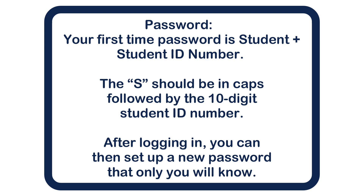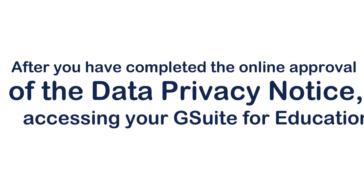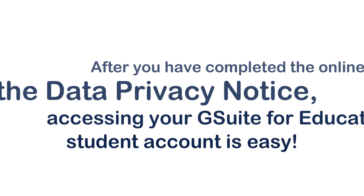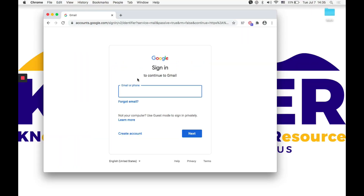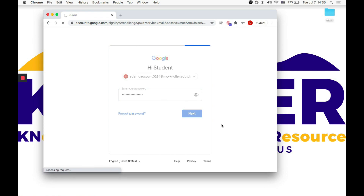The S should be in caps, followed by the 10-digit student ID number. After logging in, you can then set up a new password that only you will know. After completing the online approval of the data privacy notice, you will be prompted to the Google login page. Click sign in in the top right corner and use your MC student email address and first time password.